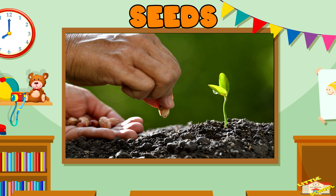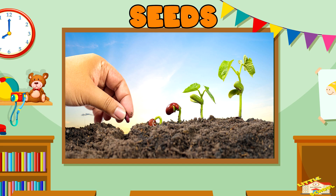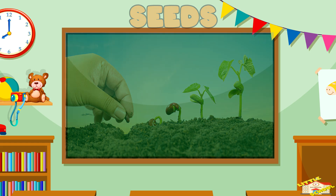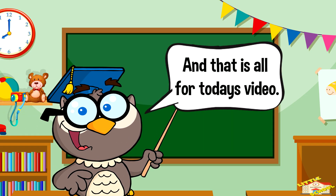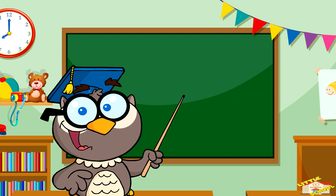When a seed is planted in the soil and gets enough water and sunlight, it will sprout and become a new plant. All these parts work together to help the plant grow big and strong. And that is all for today's video — I hope you enjoyed learning about the parts of the plant!